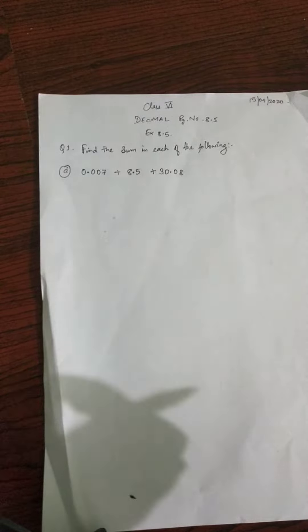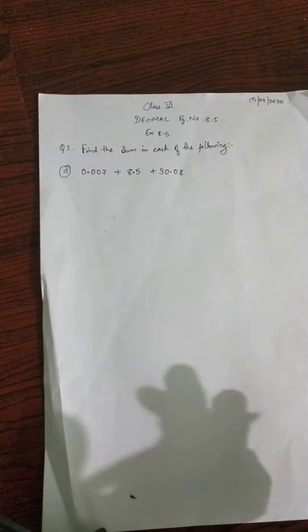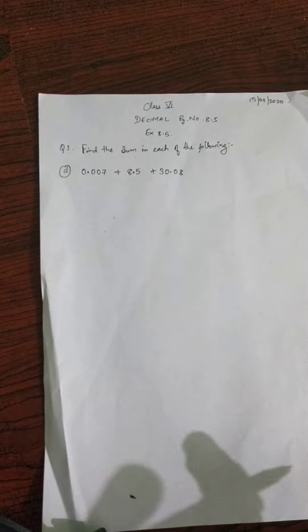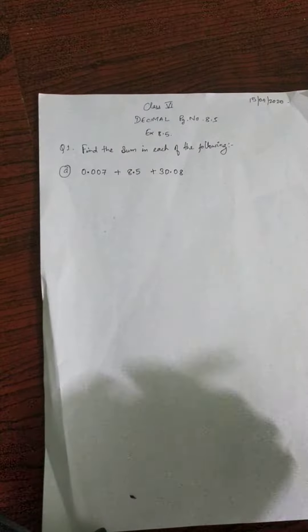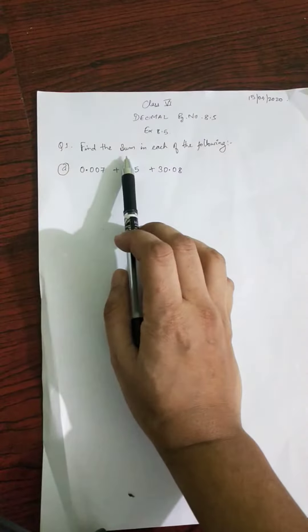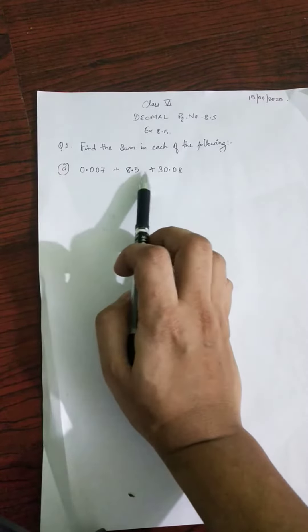Good morning class 6. In last class we saw conversion of decimal numbers into paisa to rupees, from centimeter to meter, from meter to kilometer, and we divided with the relation. Now in exercise 8.5 we have a new question: find the sum. How to add decimal numbers? There is a concept.